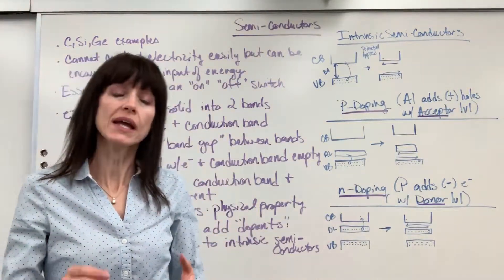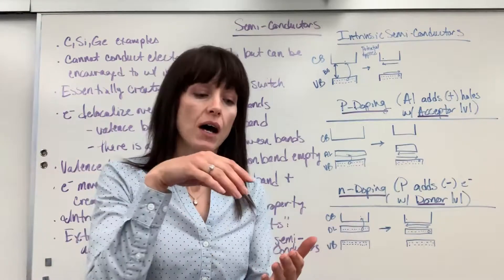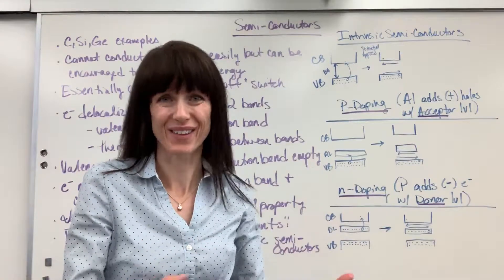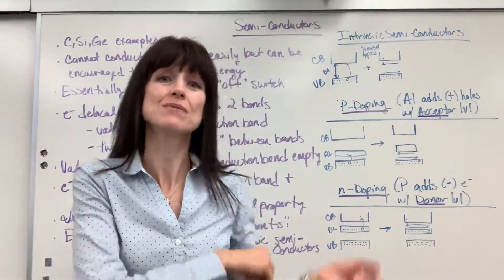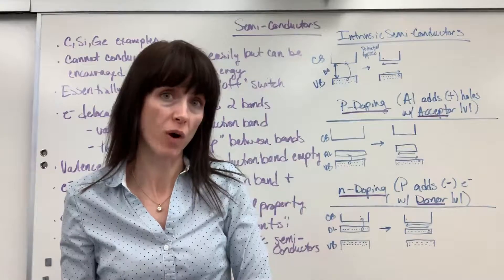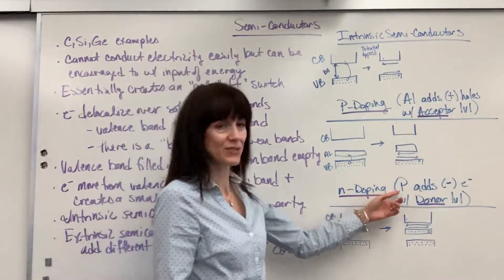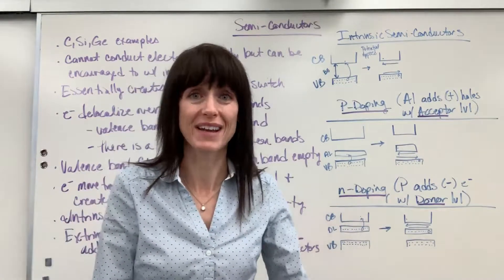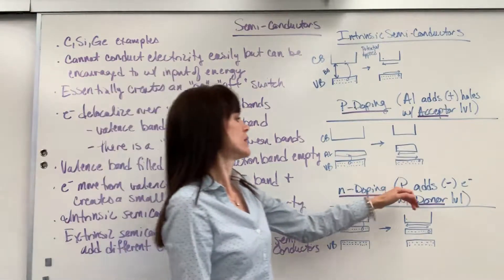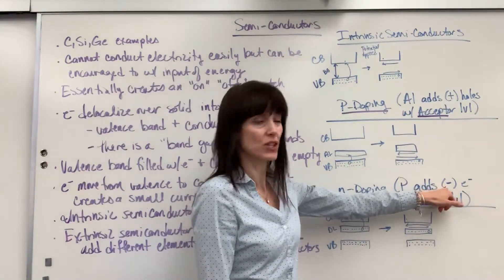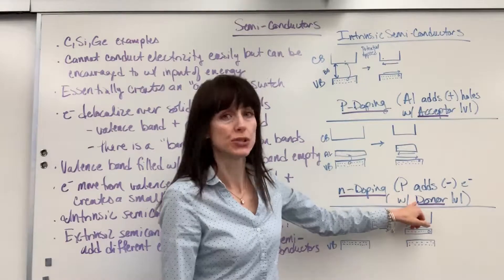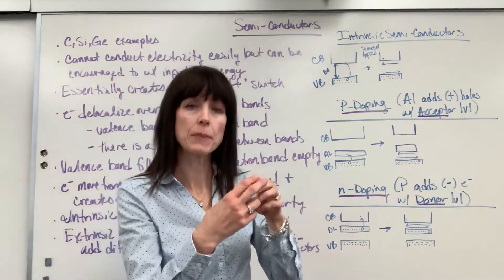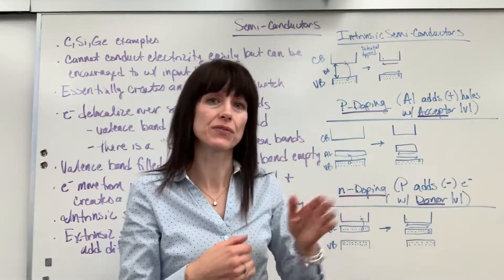Now, N-doping. N-doping is when you're going to add an element to your basic intrinsic semiconductor like silicon. But this time, the element has more valence electrons than four. So here's an example. We're going to add phosphorus. Phosphorus has five valence electrons. So it has one more electron, an extra electron, if you will. So the phosphorus adds this negative charge, it adds the electrons with what's called a donor level. And again, in essence, what this does is it makes that band gap smaller, so it's easier for the electrons to move.